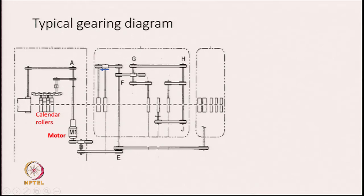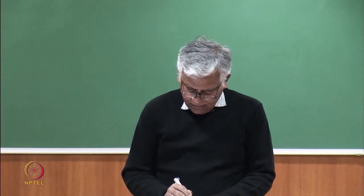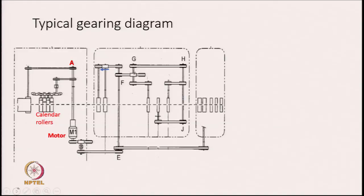There is one motor. There is a change pulley A, another change pulley G, another change pulley H, another change pulley F, and this is called belt pulley J.